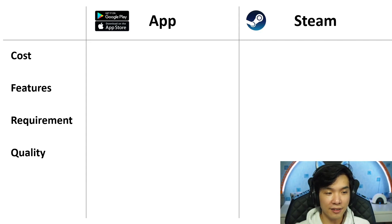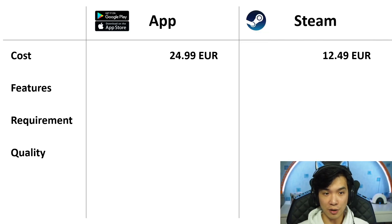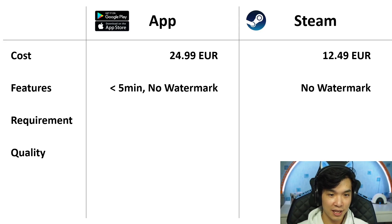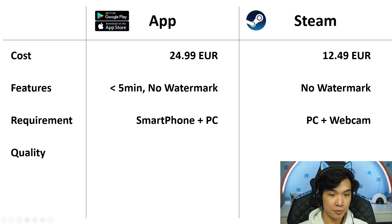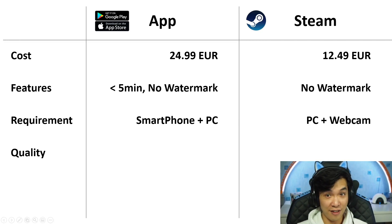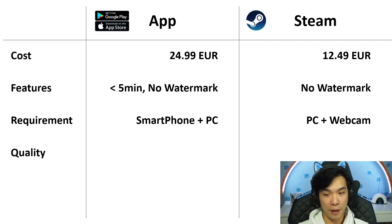What are the differences? I summarized it in four points. The most important is the cost. While both are free in general, the app offers an in-app purchase for 24.99 Euro, while on Steam the DLC costs 12.49. On the app, buying removes the five-minute restriction and the watermark. On the Steam version, you can remove the watermark for that price. For requirements: the app needs a smartphone and a computer, while the Steam version only needs an additional webcam, which most people already have.